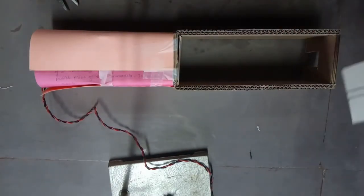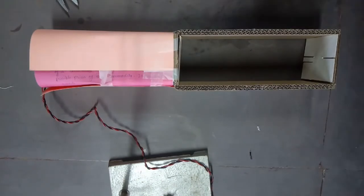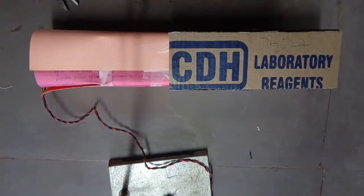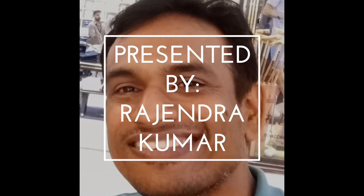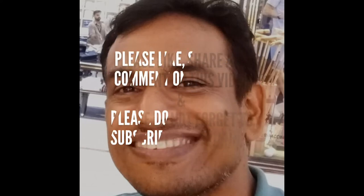Also keep one cardboard piece to cover the box from the top. In this way, your ray box is ready. Make this model for your school project. I am sure your teacher will love this model.